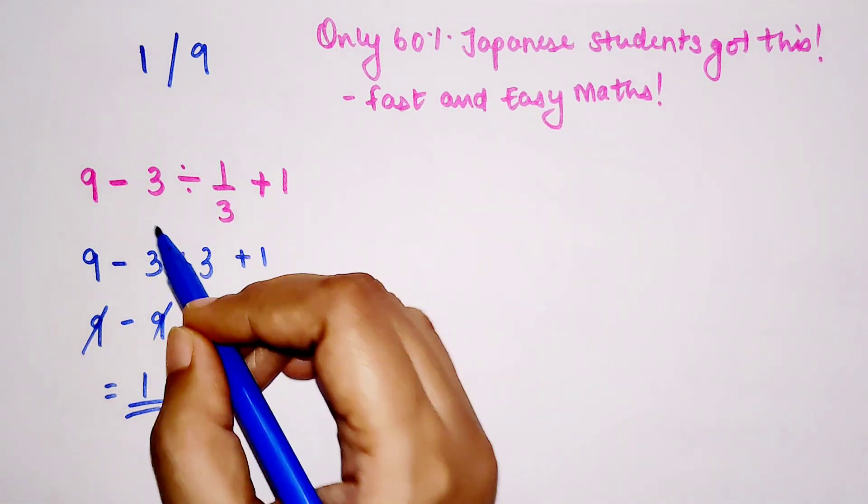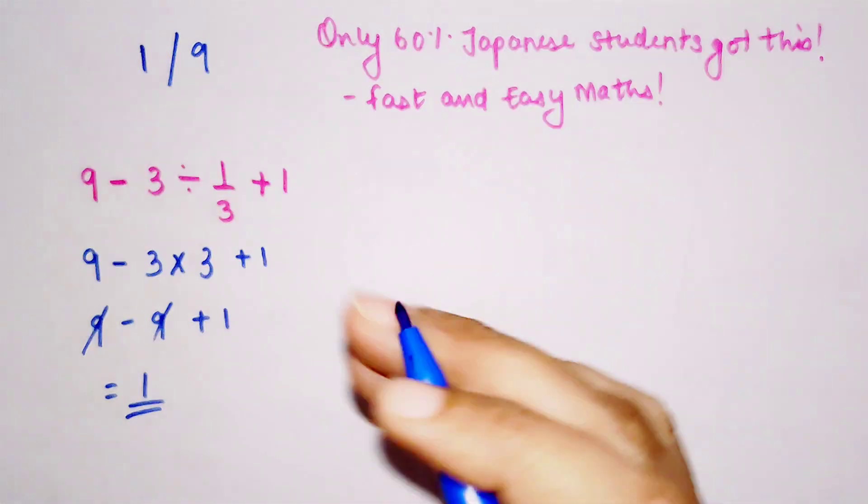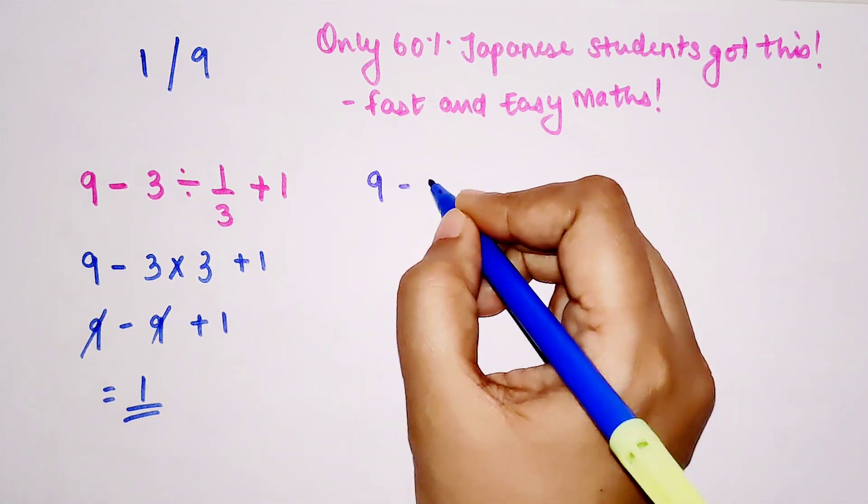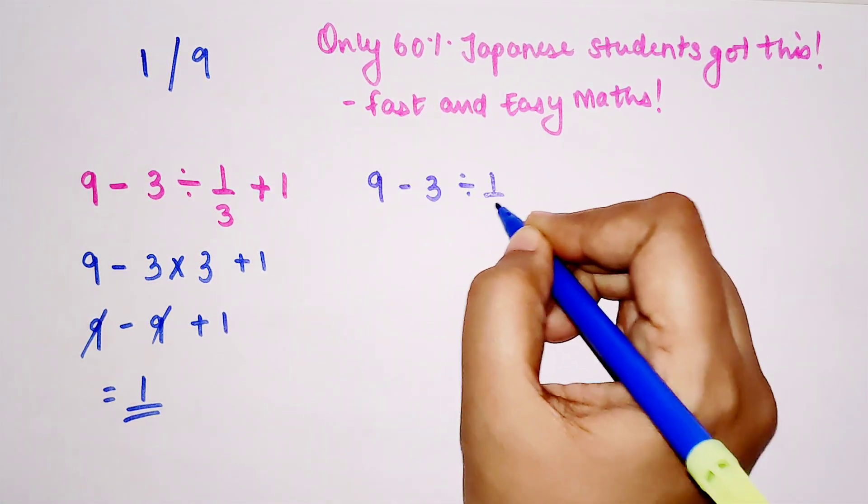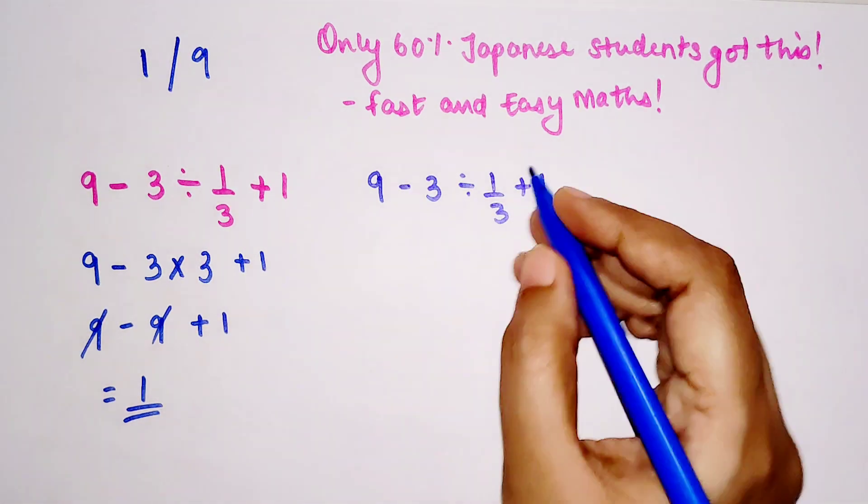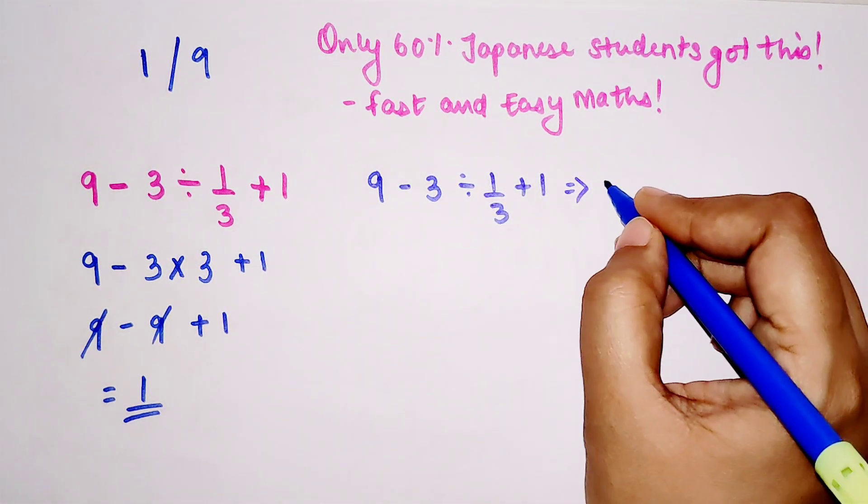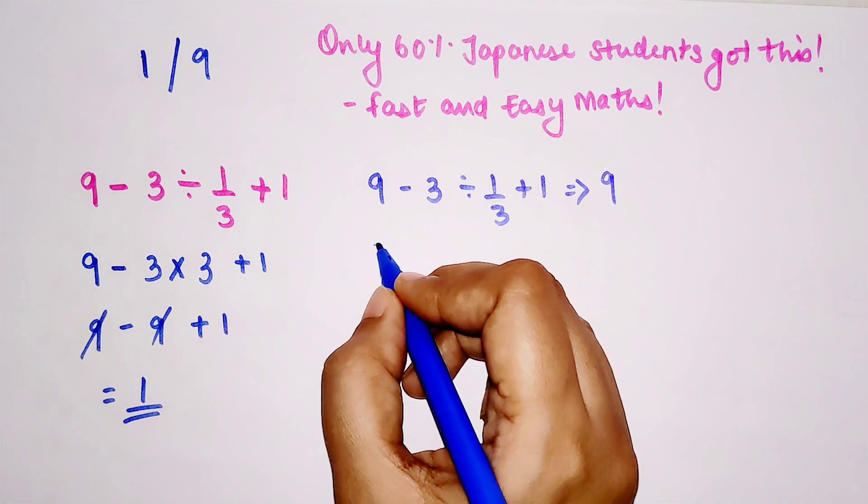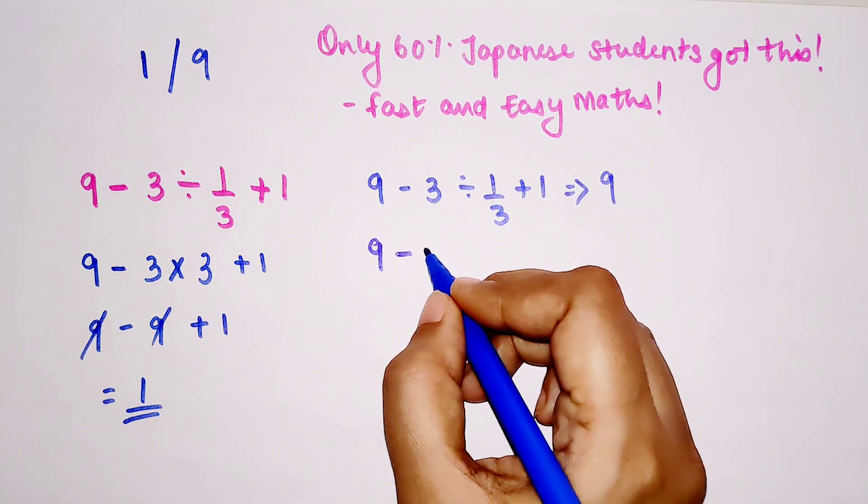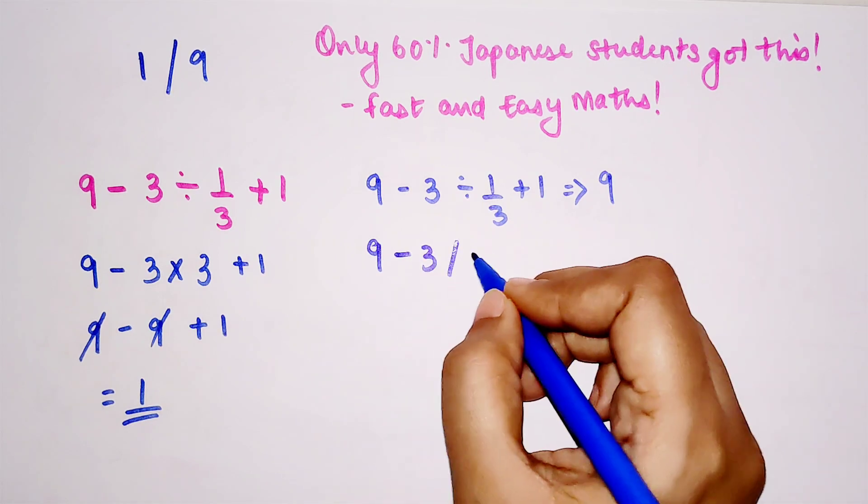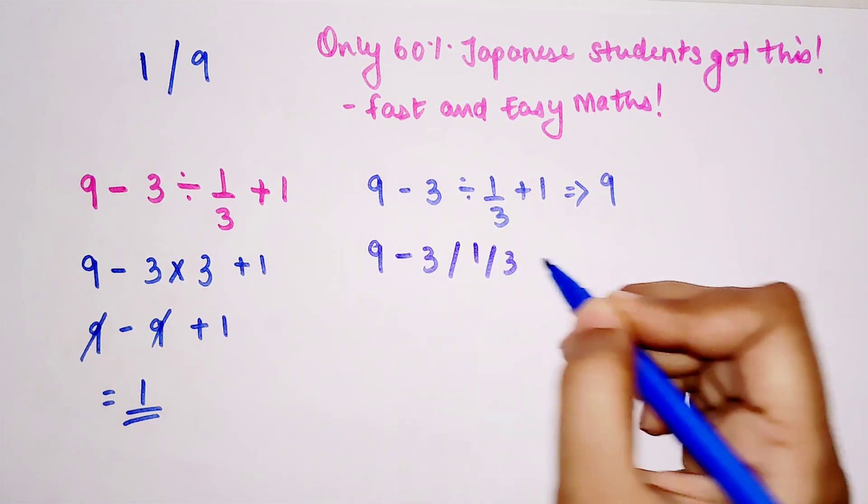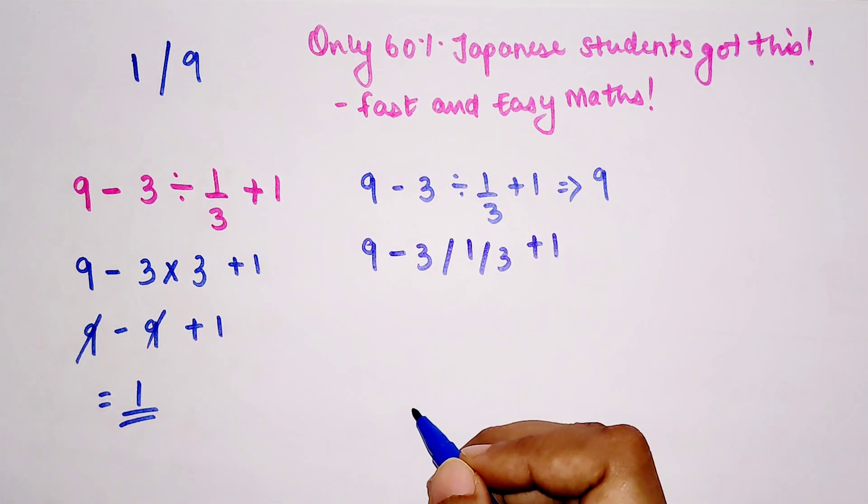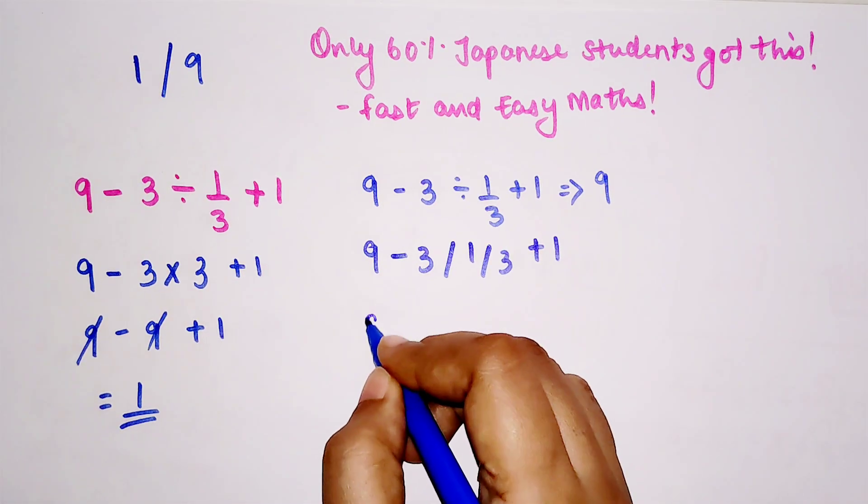When you put it in Google, the answer given to you by Google is 9. Why is that? Because when you do it normally, we do 1 divided by 3 plus 1. This is how Google reads your question. What happens over here is 9 minus 3 divide by 1.